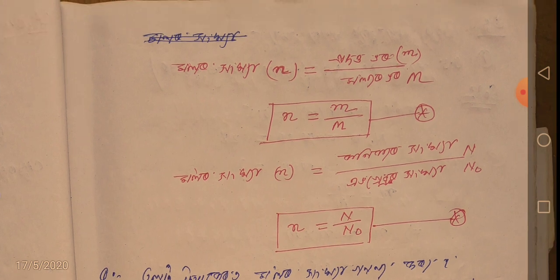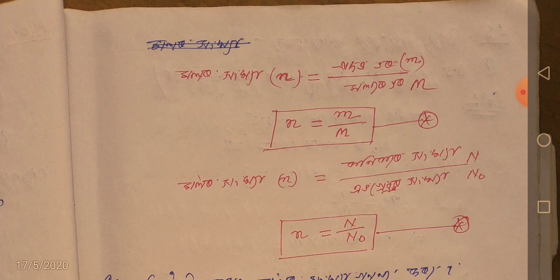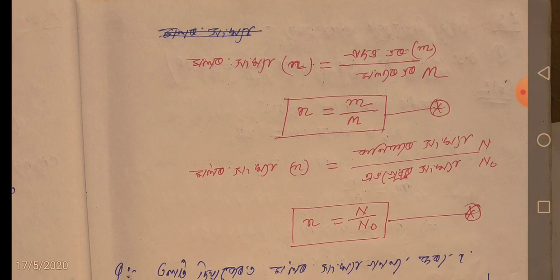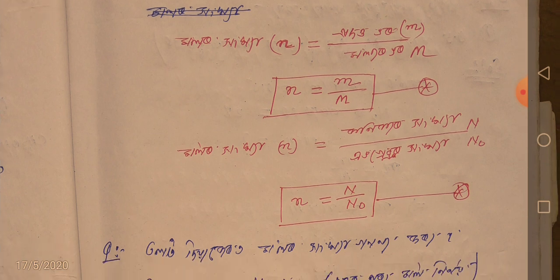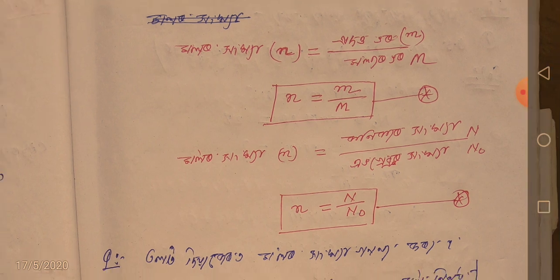If the question gives the mass, and the question mentions the mass as 2 grams or 12 grams, whatever the question gives, we write small m. Whatever is written above, that is the molar mass. The molar mass that is given — that molar mass we write as capital M. At the same time, whatever molar mass is given, we write that as the molar mass.